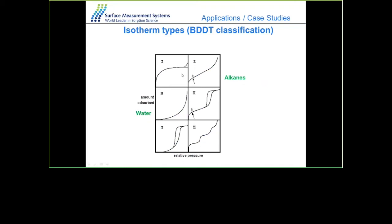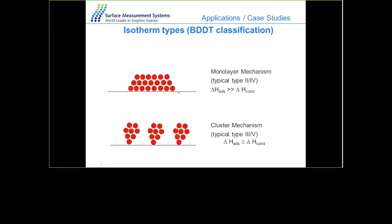Different types of isotherms provide additional information. Type 1 shows microporous materials with a straight uptake that levels to a plateau. Types 2 and 4 give information about monolayer and multilayer levels — these are used for BET surface area calculations. Types 3 and 5 are typical of condensation on the surface of the material, where vapors form a monolayer then multilayers, which is not ideal for BET surface area calculations.